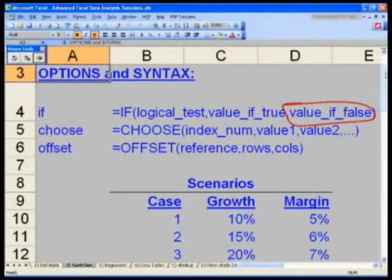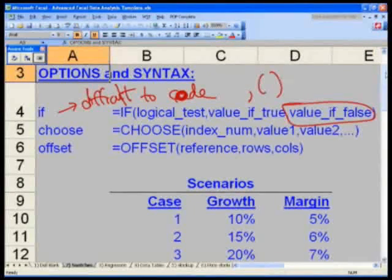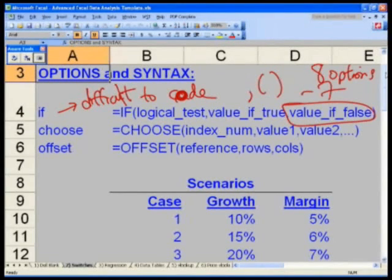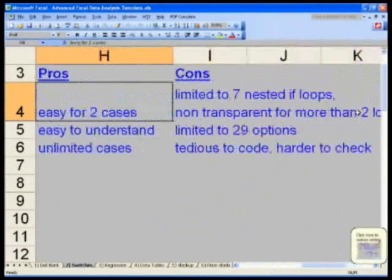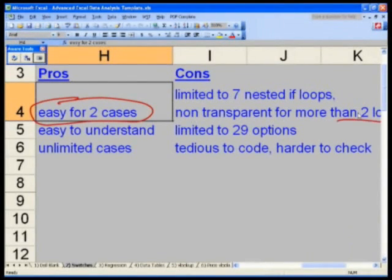So, the difficulty with if is, first of all, this is very difficult to code when you have more than one if scenario. Difficult to code, the syntax is not straightforward. You have to watch out for your commas and all your parentheses and whatnot. And secondly, you only really have up to eight options because you only have up to seven nested if statements. So, on the right-hand side, you see the pros, fairly straightforward for the advantages. It's easy to code and a simple logic for only two cases. When it's more than two, it's very non-transparent. You're only limited to seven nested if loops.